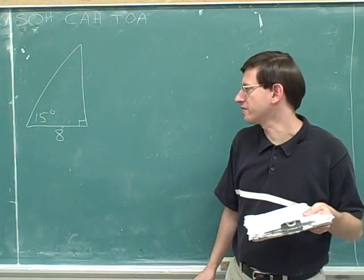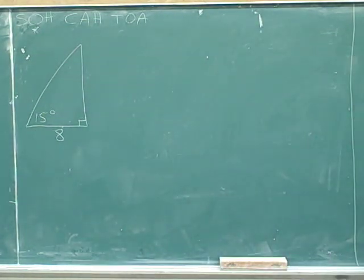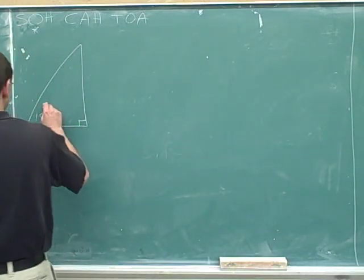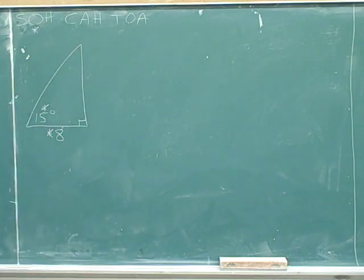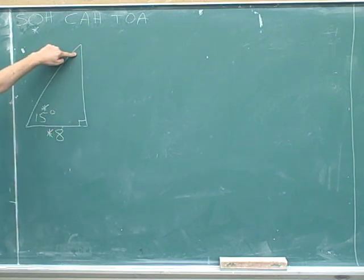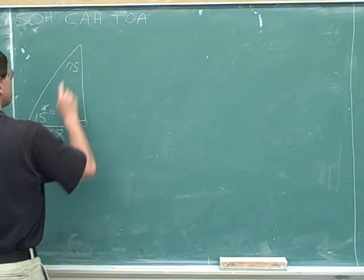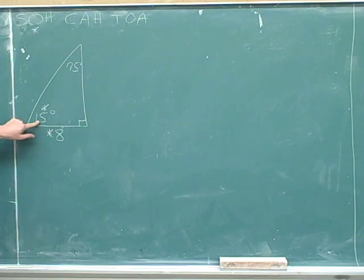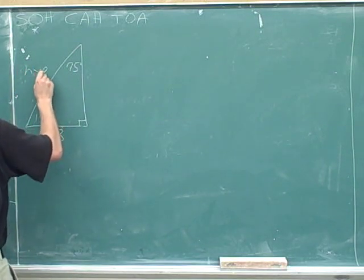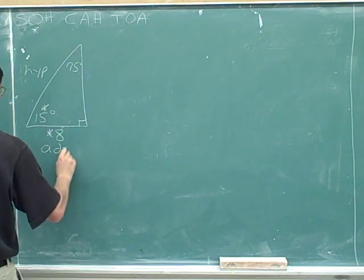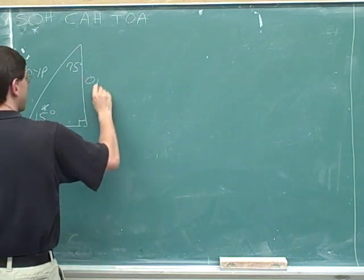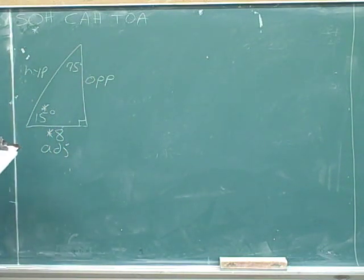Here's another example. Please try to figure out everything you can about this triangle. Let's put in some asterisks to remind ourselves what the original information was. This angle is the right angle, so the other two angles add up to 90. This angle must be 90 minus 15, which is 75 degrees. We're going to continue to focus on the angle we were originally given. Now let's label the hypotenuse — it's opposite the right angle. The adjacent side is next to the asterisk angle, and the vertical side is opposite to it.